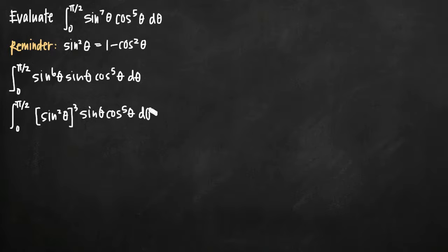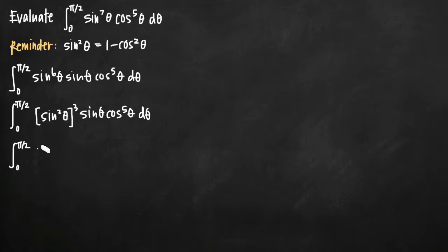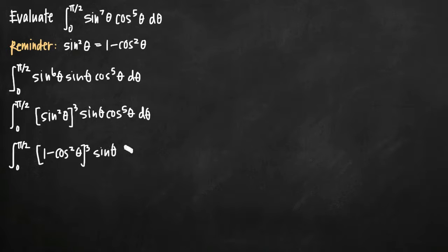The purpose of getting that even exponent and factoring so that you just have sine squared theta inside your parentheses is so that you can use this trigonometric identity: sine squared theta is equal to one minus cosine squared of theta. Since we have sine squared of theta, we can make a substitution for one minus cosine squared of theta. So what we'll have now is the integral of one minus cosine squared of theta, cubed, times sine of theta times cosine to the fifth of theta d theta.